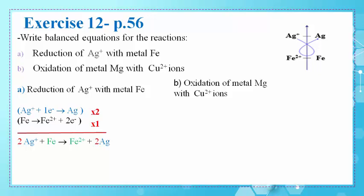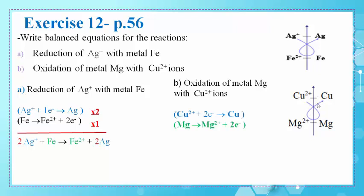In part B, the oxidation of metal Mg with Cu2+ ions: placing them on an axis, Cu2+ is the strongest oxidizing agent and Mg is the strongest reducing agent, so a spontaneous reaction takes place. The half reactions are: Cu2+ + 2e− → Cu, and Mg → Mg2+ + 2e−. The overall equation is: Cu2+ + Mg → Mg2+ + Cu.